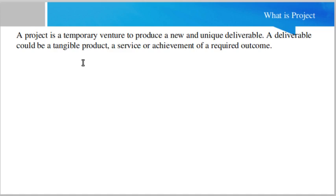So let's start. What is a project? With respect to project management, a project is a temporary venture to produce a new and unique deliverable. A deliverable could be a tangible product, service, or achievement of a required outcome. Essentially, a project is an activity or venture that is unique and temporary, and it produces some output — some service or product.